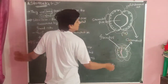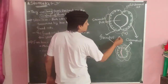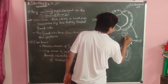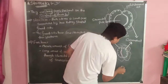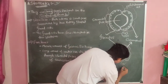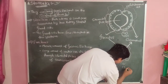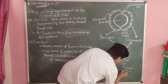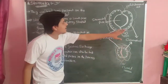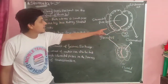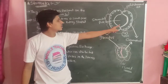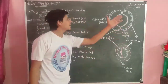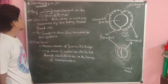Here you can see the figure of stomata. This one, labeled A, is the open stomata, and this one, labeled B, is known as the closed stomata.